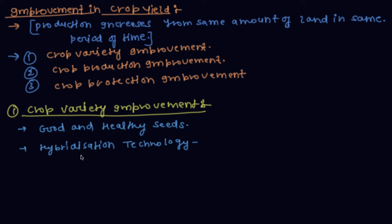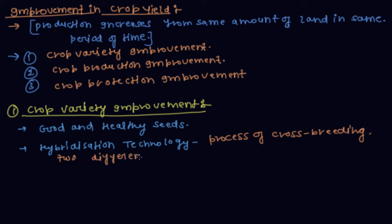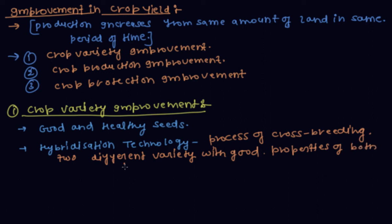Hybridization technology is the process of cross-breeding two different varieties of crops to produce a new variety with good properties of both the crops.